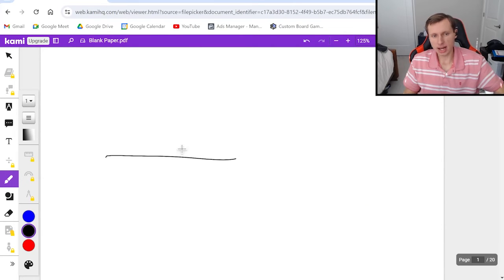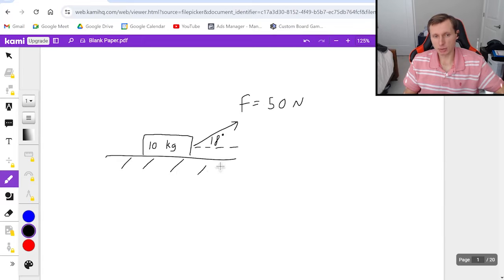So first, let's say I have a box here. The box has a mass of 10 kilograms, and I'm going to be pulling this box with a force of 50 newtons at an angle of 18 degrees. And we are going to have friction this time. This is a rough surface, and I'm going to give you the coefficient of kinetic friction mu_k equals 0.2.